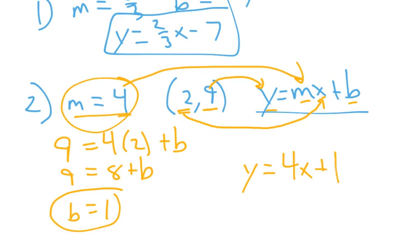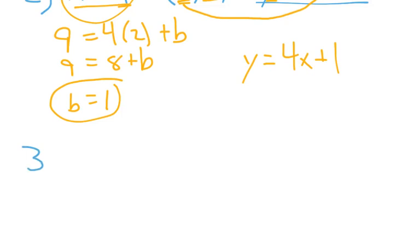So for good measure, I'll do one more example. So again, let's say we have a point, m equal, or sorry, slope, negative 1 third. And we have the point, 12, 5. What is the equation for the line that satisfies this information?